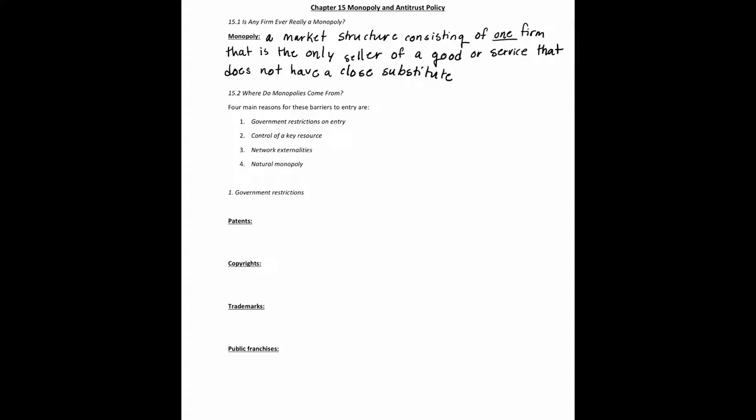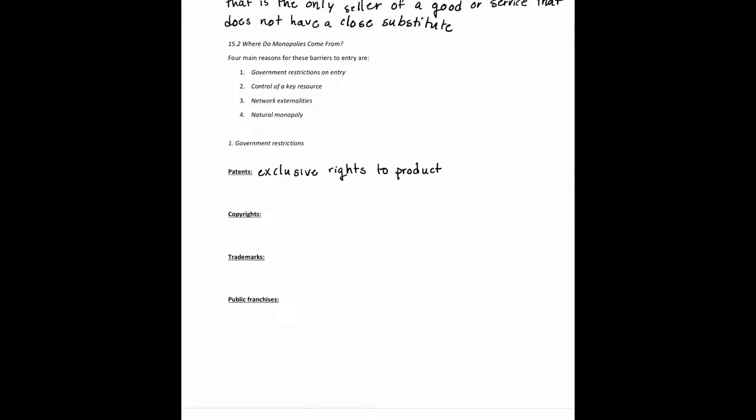When it comes to government restrictions, the U.S. government may block entry into an industry in two main ways. The first is patents, copyrights, and trademarks. When newly developed products such as drugs are being developed, they are granted patents, which are exclusive rights to produce a product for 20 years from the patent filing date.